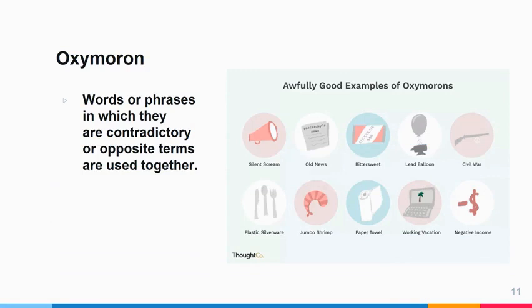An oxymoron is a word or phrase in which two words contradict each other — they're used as opposites. For example, old news: old and news are opposites because if it's news, it should be current. Or, jumbo shrimp: jumbo means big, shrimp means small. Plastic silverware is another example, because silverware is supposed to be silver — so those words are opposites of each other.